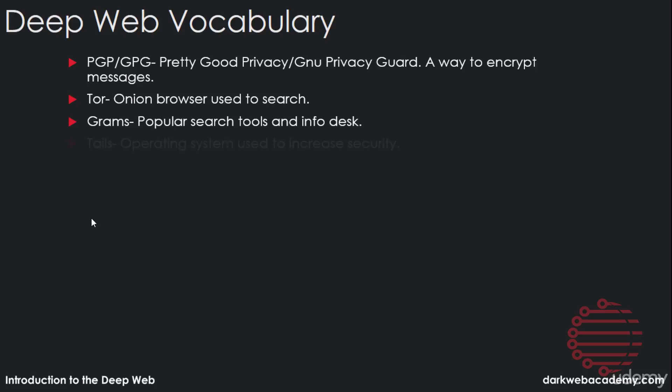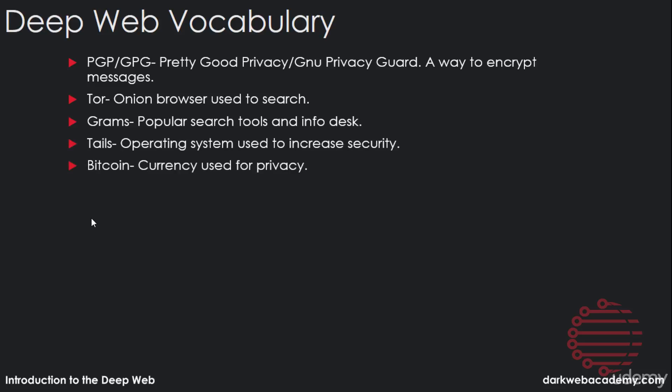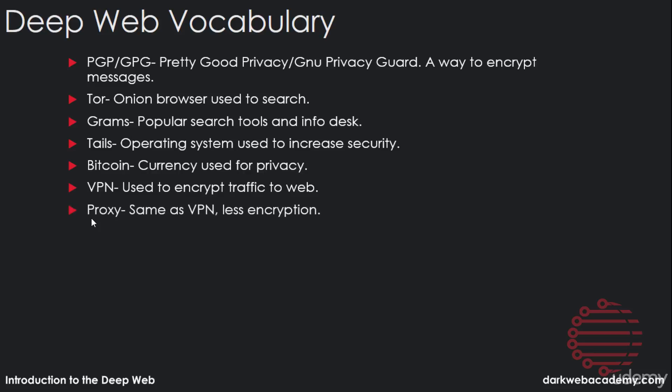Another thing we did talk about was Tails, which was an operating system used to increase security. We had Bitcoin, which is an online currency used for privacy. We have a VPN, which was a way to encrypt traffic to the web. We have a proxy, which is the same as a VPN but with a little less encryption. And we have Electrum, which was a private Bitcoin wallet.